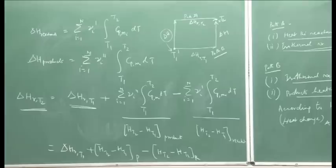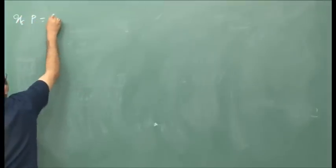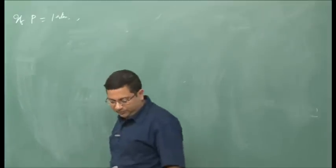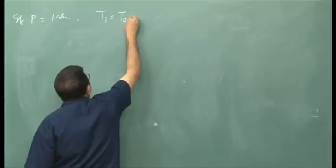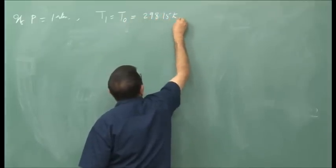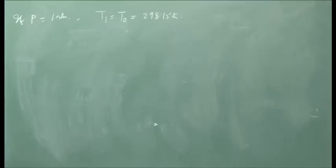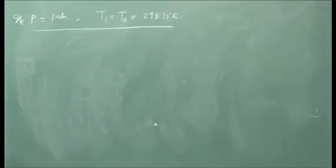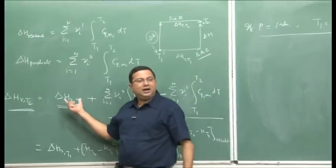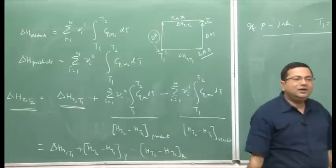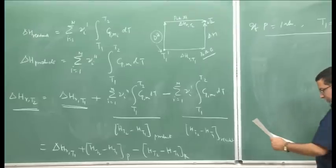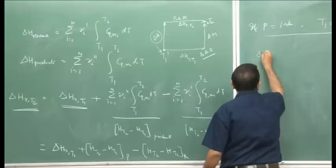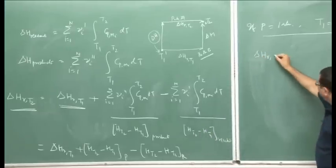Now let us take a step backward. If pressure is 1 atmosphere and the initial temperature T1 equals T naught — the standard state of 298.15 Kelvin — then the conditions are standard temperature and pressure. Therefore, the heat of reaction at standard temperature and pressure can be expressed as the standard heat of formation.